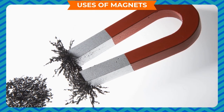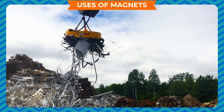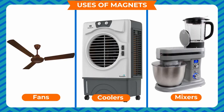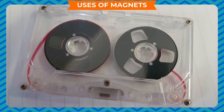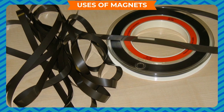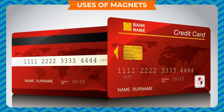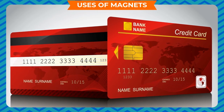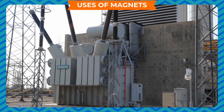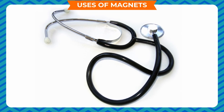Uses of magnets: Magnets are used to separate iron or magnetic substances from non-magnetic substances in industries, and in electric motors used in fans, coolers, mixers, etc. Video and audio cassettes contain a reel of magnetic tape on which audio and video information is encoded. Credit, debit and ATM cards have a magnetic strip containing your bank account information. Speakers and microphones have ring-shaped magnets in them. Magnets are also used in transformers, and small magnets are used in medical instruments.